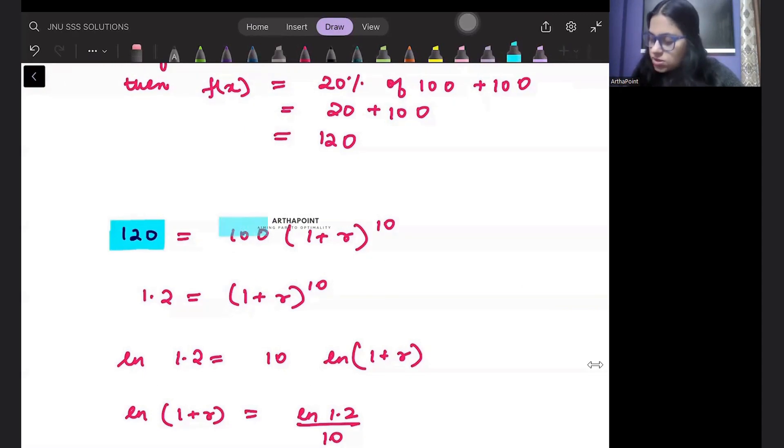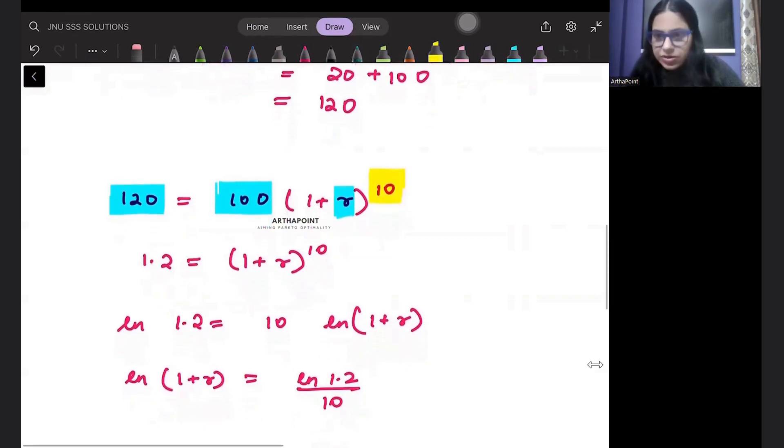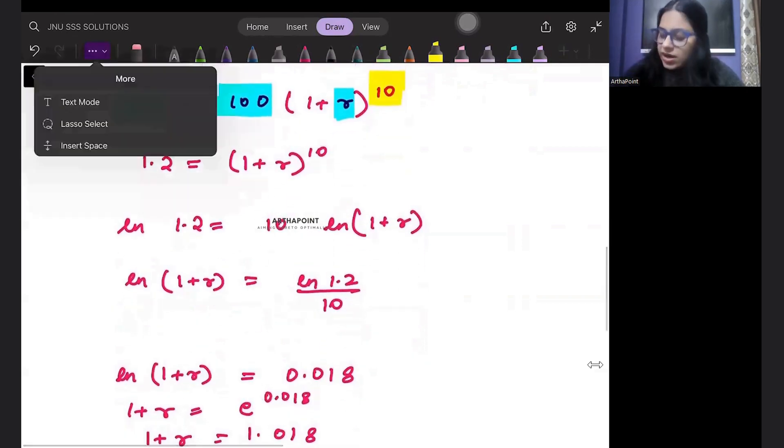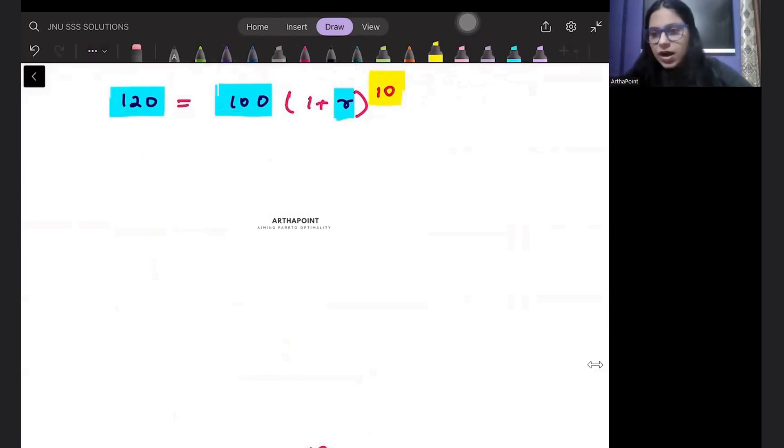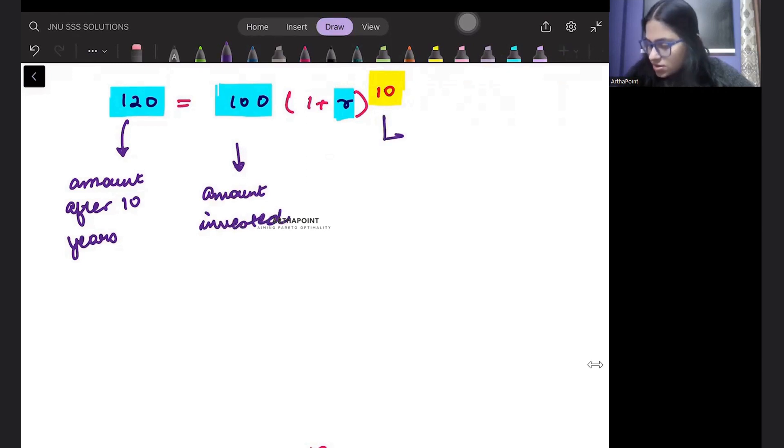Instead of final amount, I will replace this with 120. My initial amount was 100. I don't know the interest rate per year, I have to find r per year, and I know that the time period is 10 years. T is 10, it's for 10 years. This is your amount after 10 years, this is the amount that you have invested, this is the time period, the number of years, and this is your interest rate, this is your R.